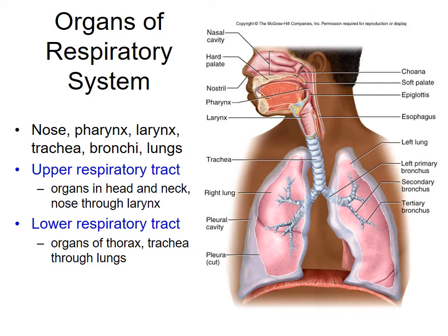The respiratory system is often divided into the upper and lower respiratory tract. The upper respiratory tract includes any organs or structures found within the head and neck — the nose, pharynx, and larynx. The lower respiratory tract is in the thoracic cavity, which means the trachea, bronchioles, and lungs fall in that particular division.